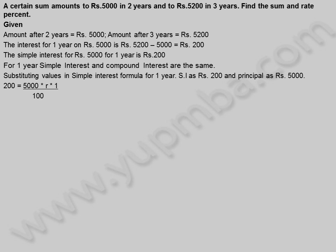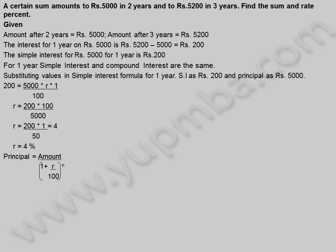Substituting values in the simple interest formula: simple interest is 200 rupees, principal is 5,000 rupees. So 200 = 5,000 × r × 1 / 100. Rate = 200 × 100 / 5,000 = 200/50 = 4. Rate is equal to 4%.